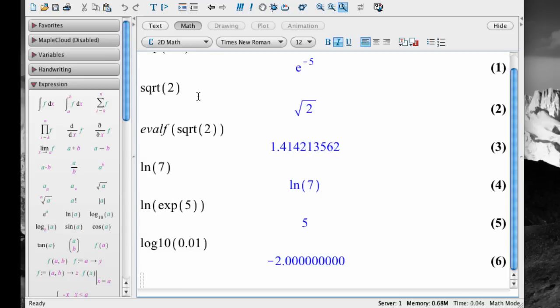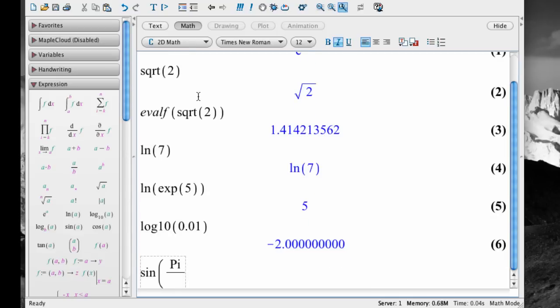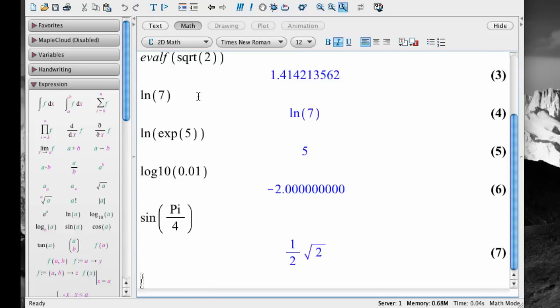Trig functions work similarly and use the syntax you'd expect. For example, to find the sine of pi over 4, type sin, open parenthesis, capital P, lowercase i, slash to create the fraction, 4, then navigate out of the denominator using the right arrow key, and then close parenthesis and hit enter. Notice that Maple gives you the exact value of the sine.